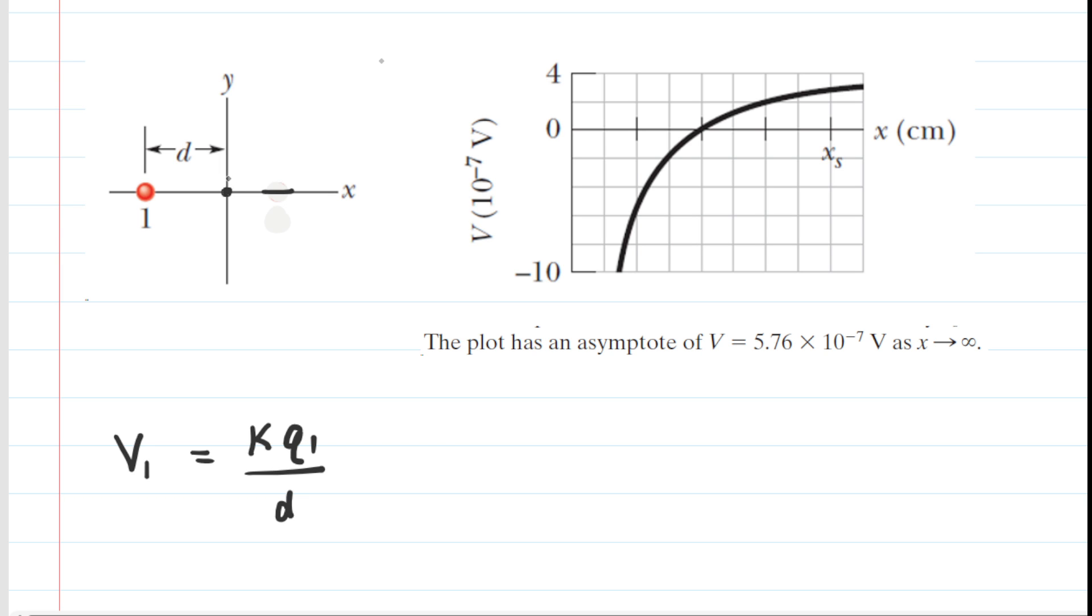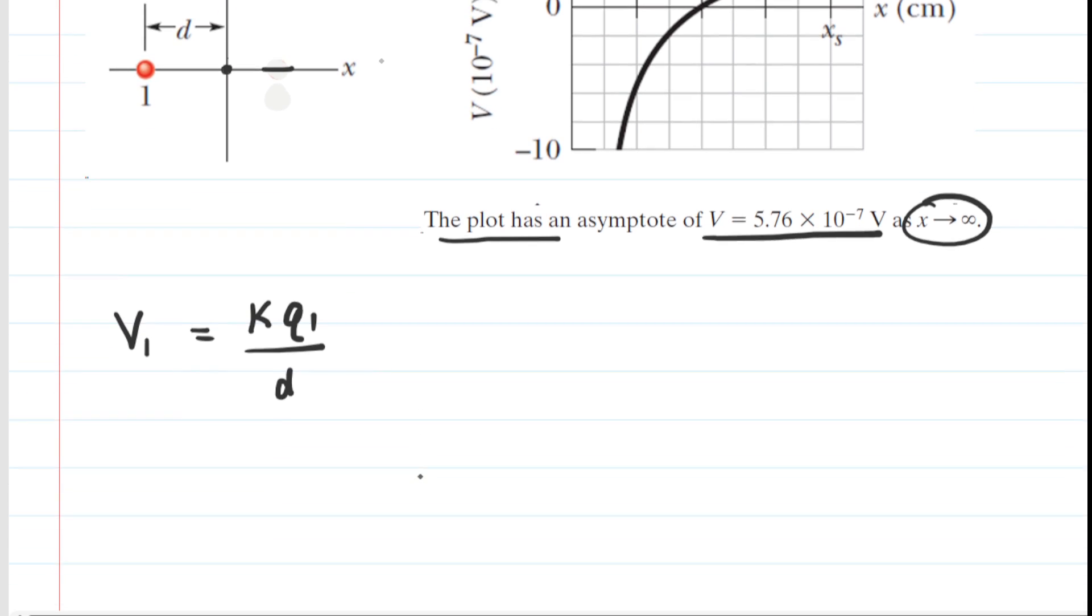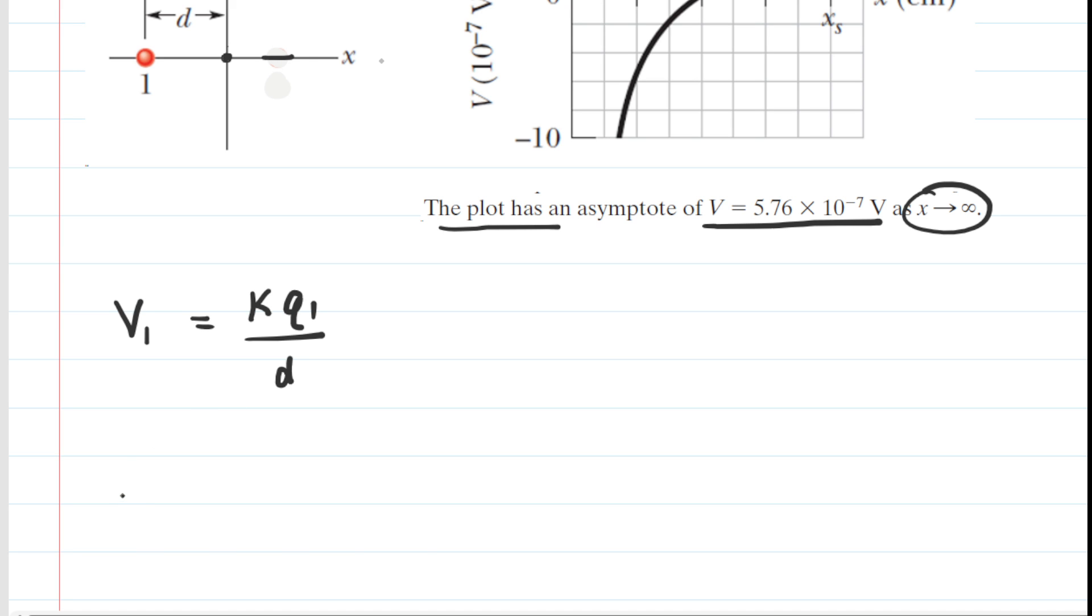Now we actually know what that potential is because of this statement right here. It says that as x approaches infinity, in other words, as we grab Q2 and move it infinitely far away along the positive x-axis, then the potential value approaches this number right here. So we can actually plug that number in for V1.